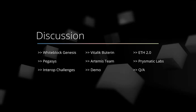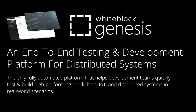We'll have plenty of time for Q&A — we already have some questions that popped up in the chat. Now, taking a few minutes to talk about the Whiteblock Genesis platform: Whiteblock Genesis has been around for 18 months and is an end-to-end testing and development platform for distributed systems. It's being leveraged by Ethereum 2.0 implementers so they can test in isolation and make sure everything works. It's also used by distributed systems in general, IoT, and other blockchains.